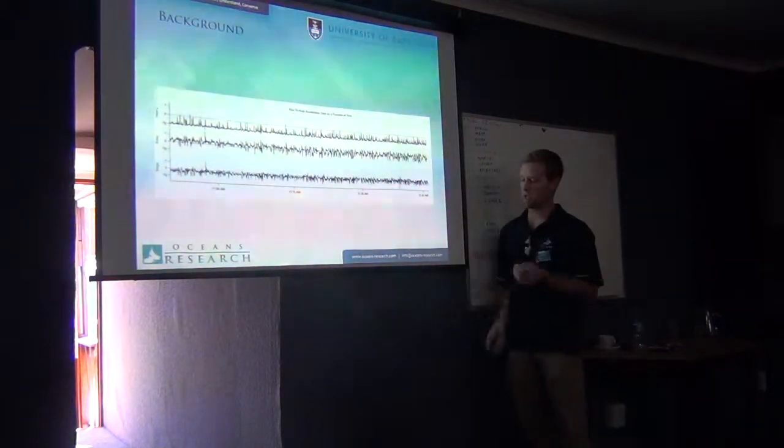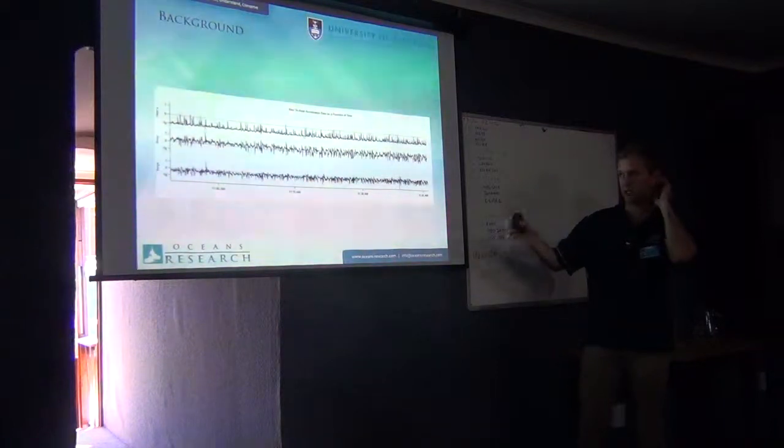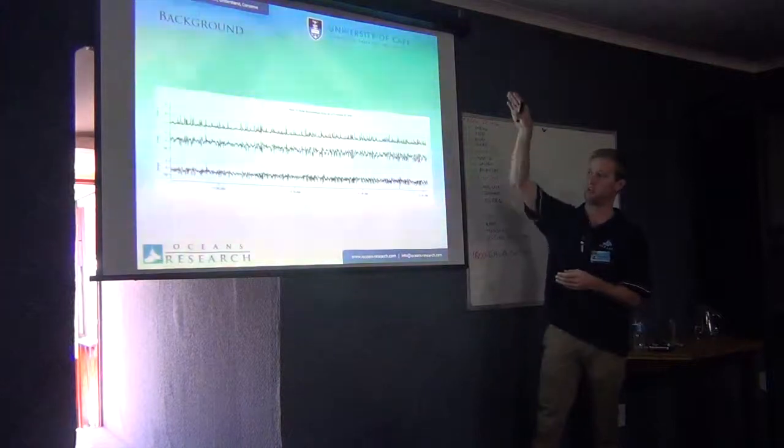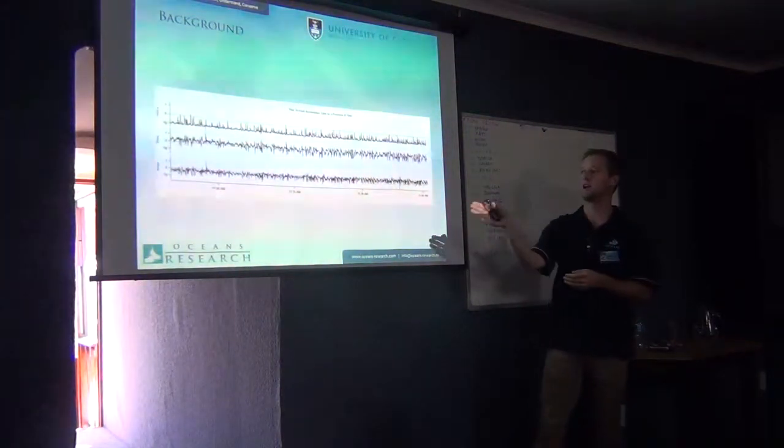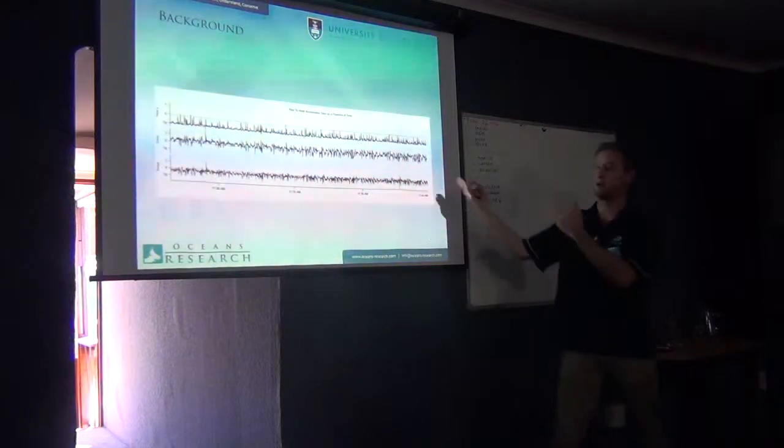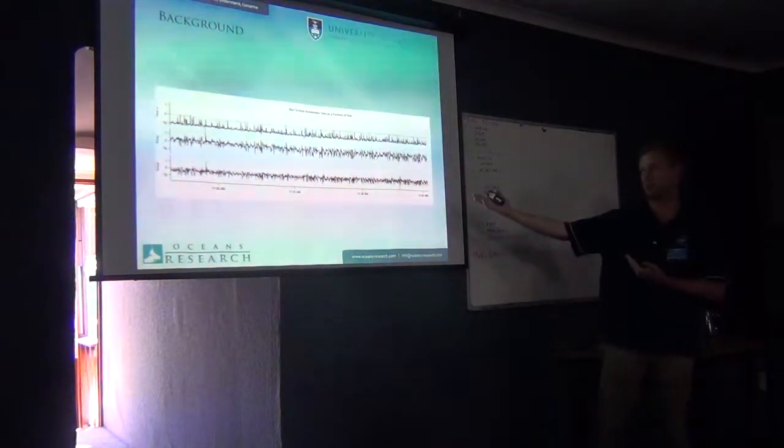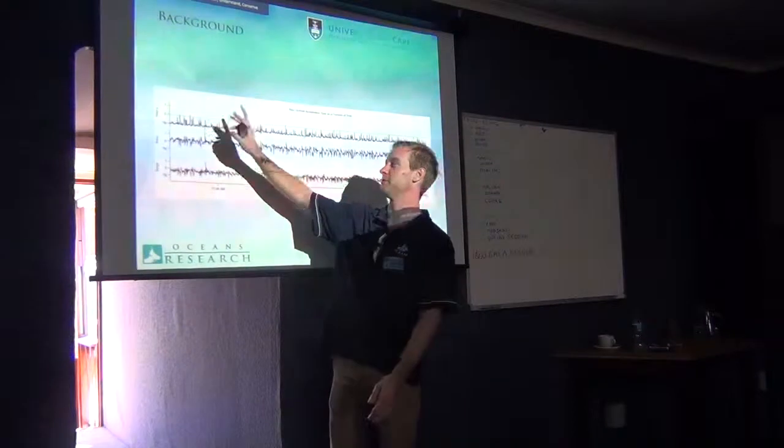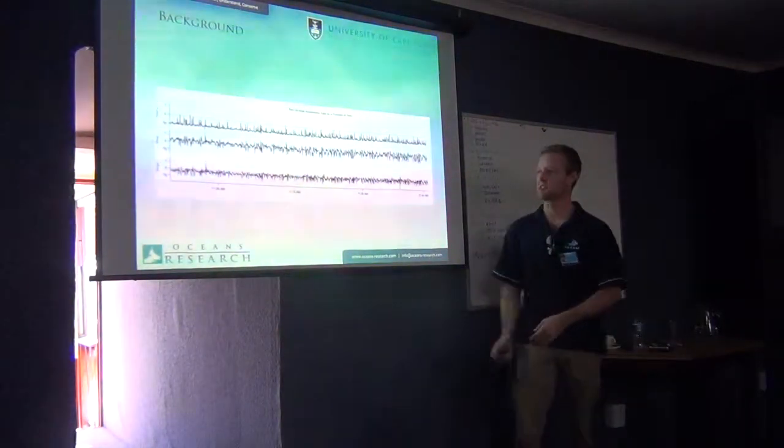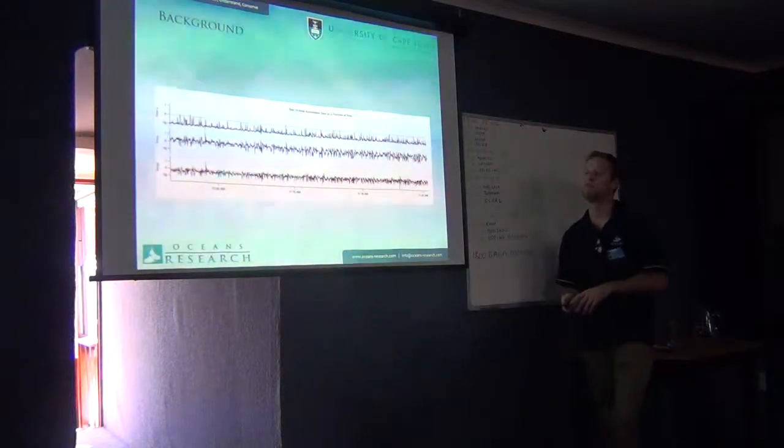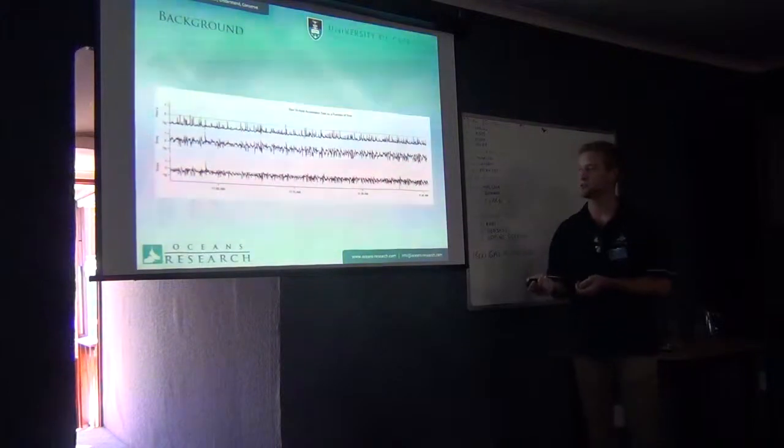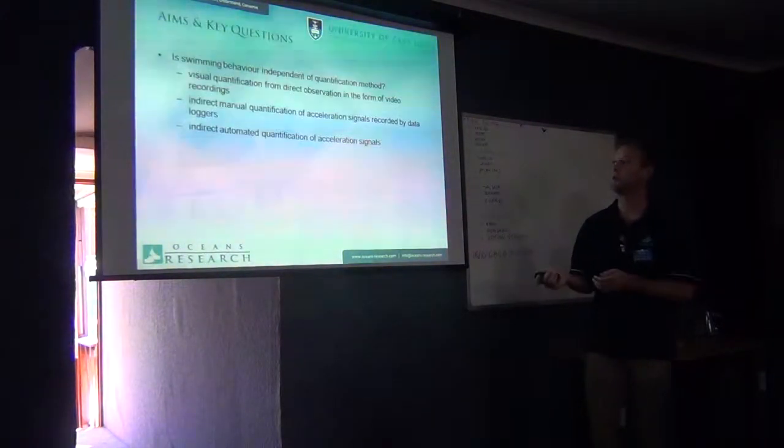This is essentially what you get from an accelerometer. This is a tri-axial accelerometer. So we've got acceleration in the heave axis that would be up and down, the sway axis left and right, and then the surge axis forward and back. You can see here that it's not very clear what's going on. It doesn't say, right here it was swimming steadily, here it was burst swimming. There's a bit of kind of manipulating the data that needs to be done and then some interpretation. So that's sort of what I wanted to do with this project.